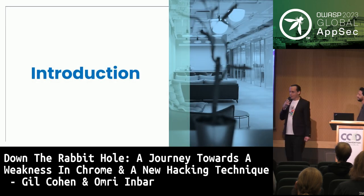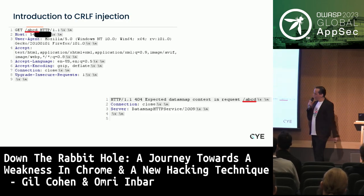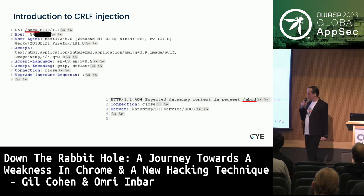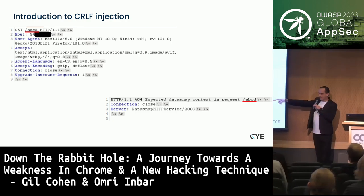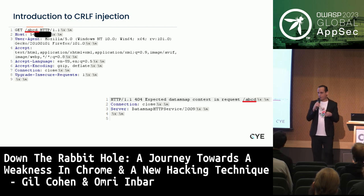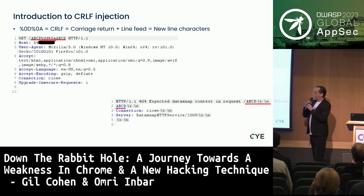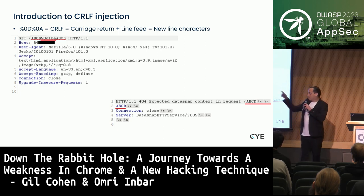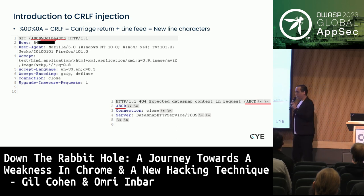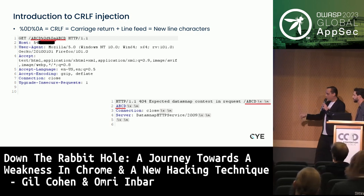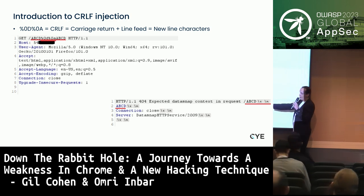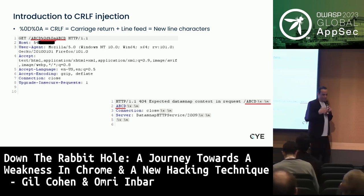Let's start with a basic introduction of what was the trigger for the entire research: CRLF injection. CRLF injection is a simple reflected attack, similar to cross-site scripting. When you write ABCD as part of the GET URL, you get the same value reflected back. CRLF stands for carriage return and line feed — new line characters — represented as %0D%0A in URL encoding. When you have this reflected value vulnerable to CRLF injection, you can inject your own response headers. This was the initial vulnerability that initiated the entire research.